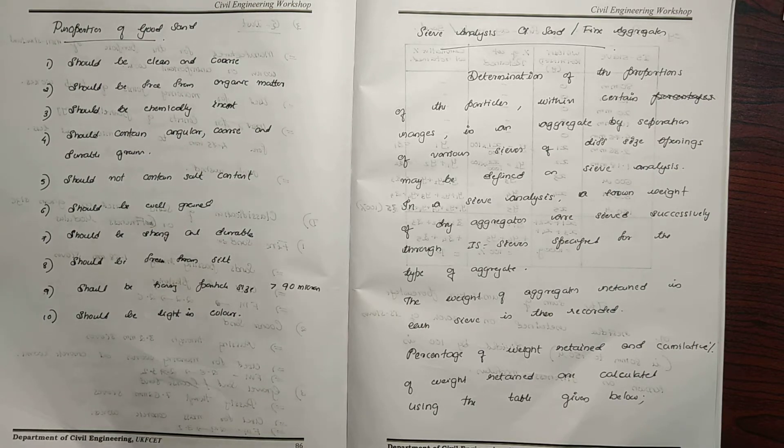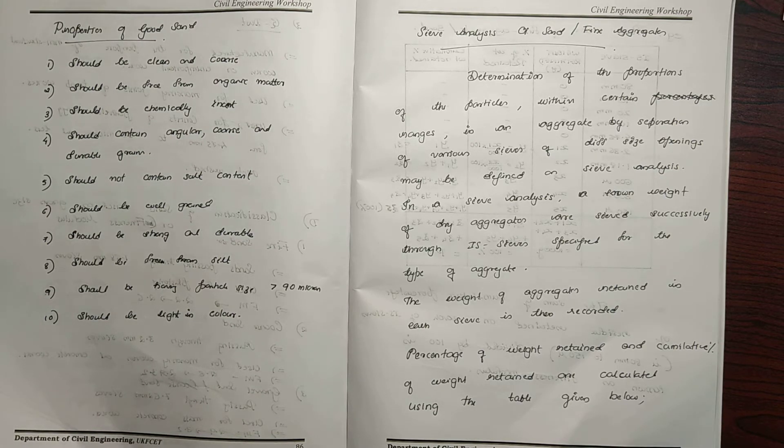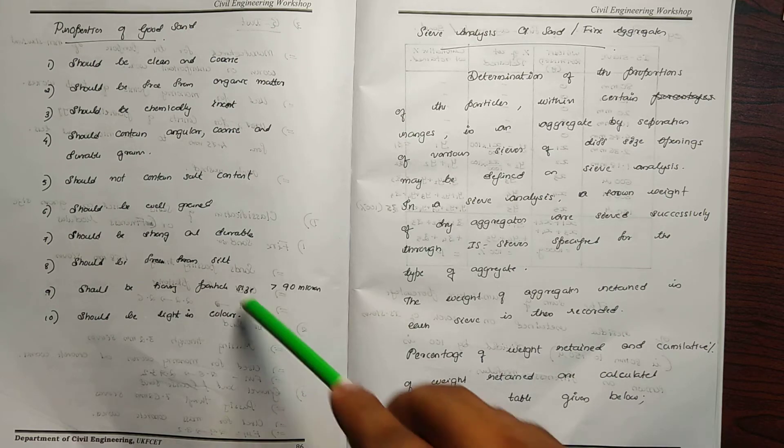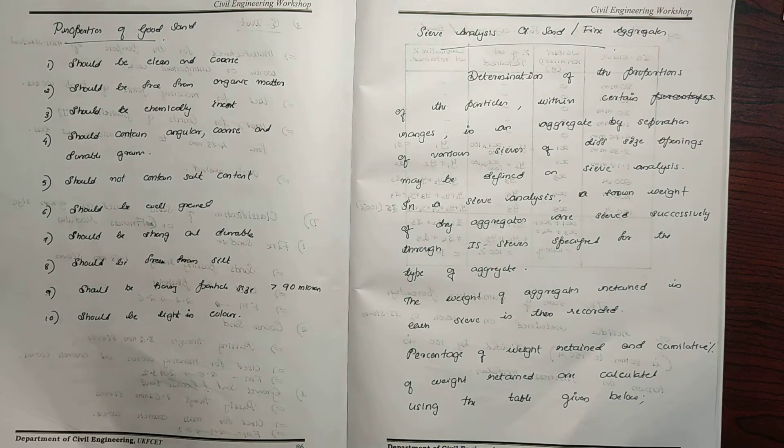What are the properties of good sand? Sand should be clean and coarse. It should be free from organic matter.